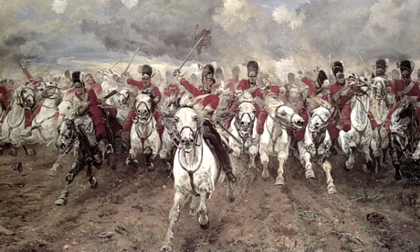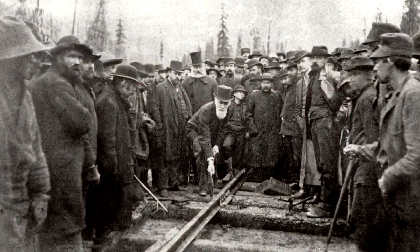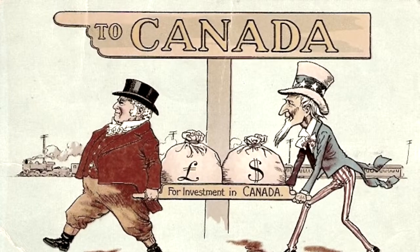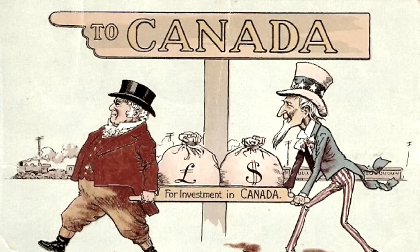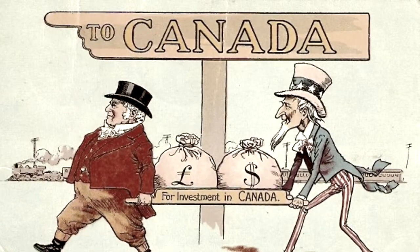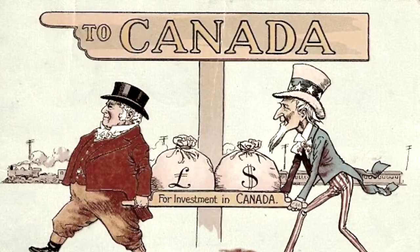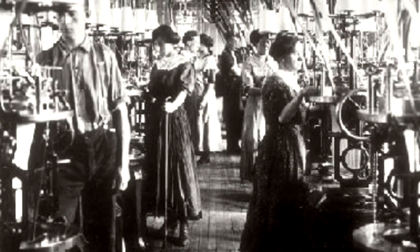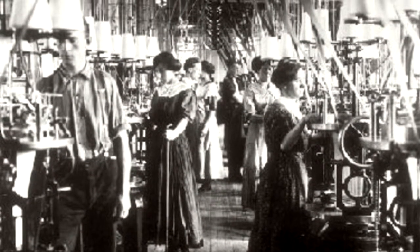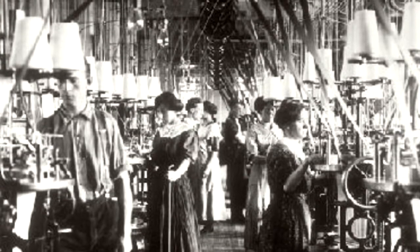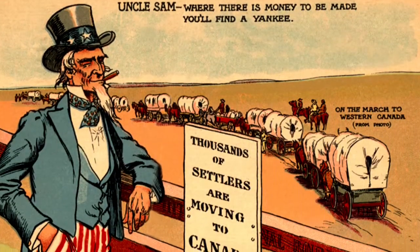The causes of the Lower Canada Rebellion include the huge tensions between the French and the English. The British governor gave most of the government jobs to the English. Another cause was the inability to form a party capable of dominating the majority. The economy in Canada was in crisis, and the difficulties in agriculture and fur trade adversely affected the population's standard of living. In addition, there were class struggles and feelings of a Canadian culture in danger, with the massive wave of British immigrants looking for land and food.